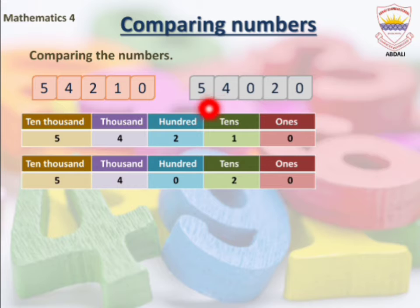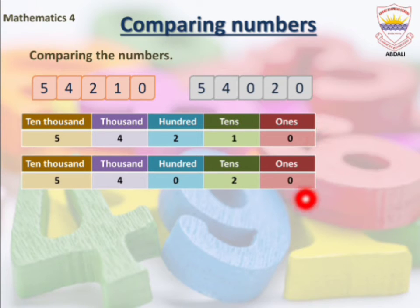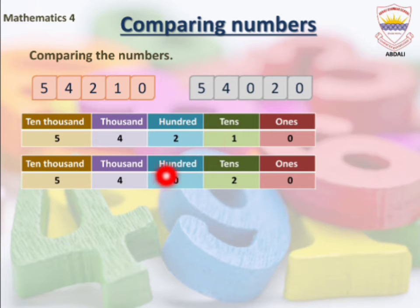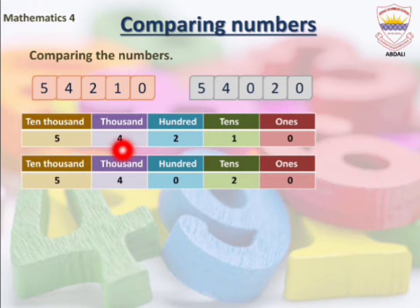Similarly, we write our second number, 54,020, in the place value chart. We write zero under ones, two under tens, zero under hundreds, four under thousands, and five under ten thousands.